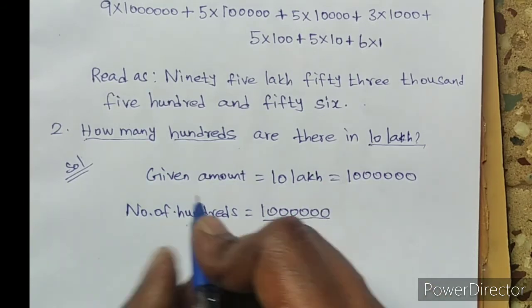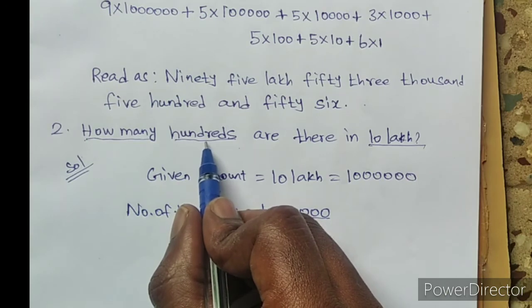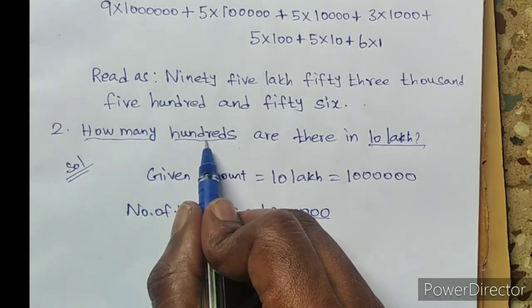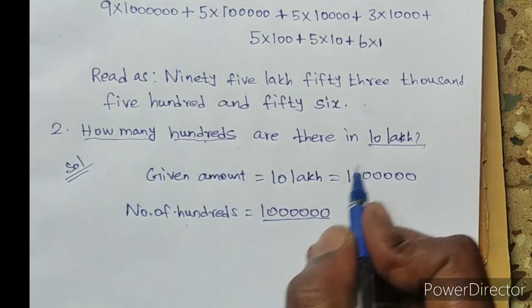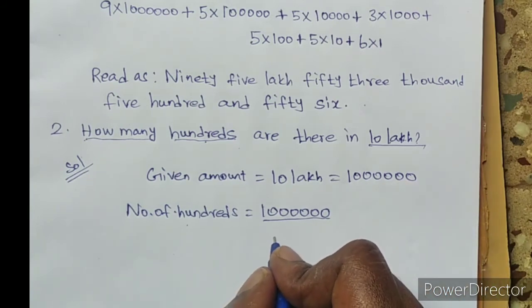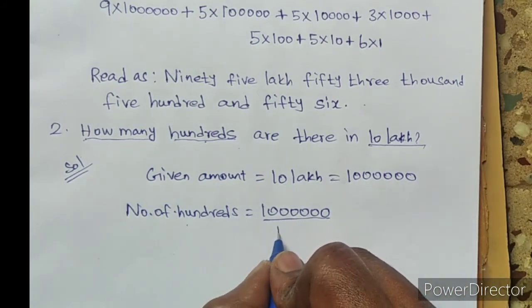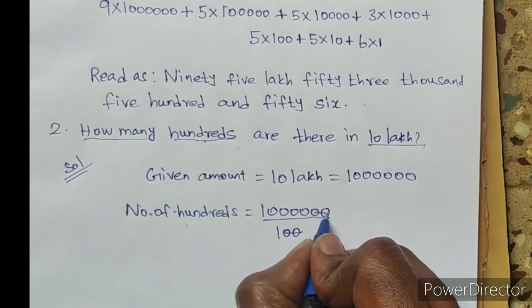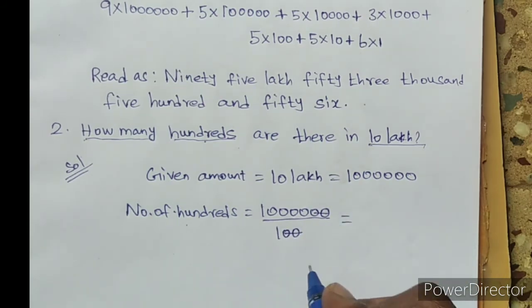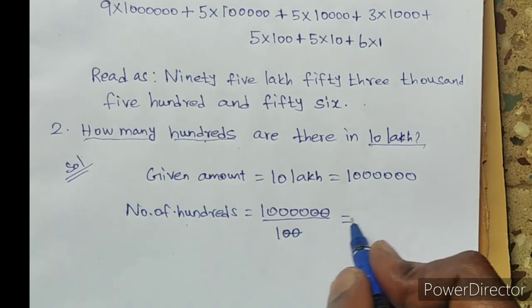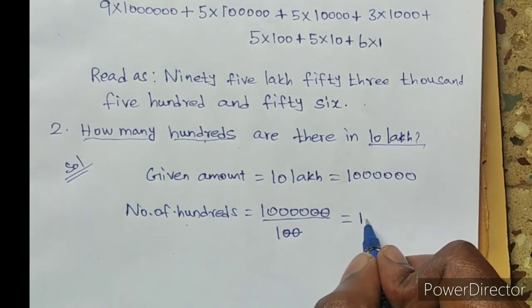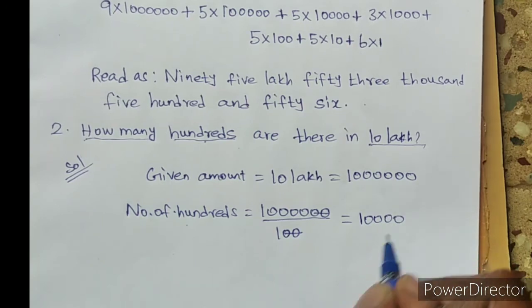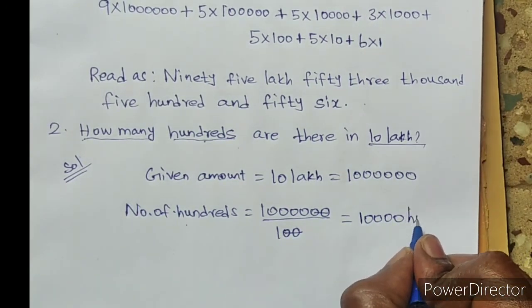10 lakh divided by hundred. Hundred has two zeros, so cancel the two zeros. How many hundreds? Ten thousand hundreds. Ten thousand hundreds.